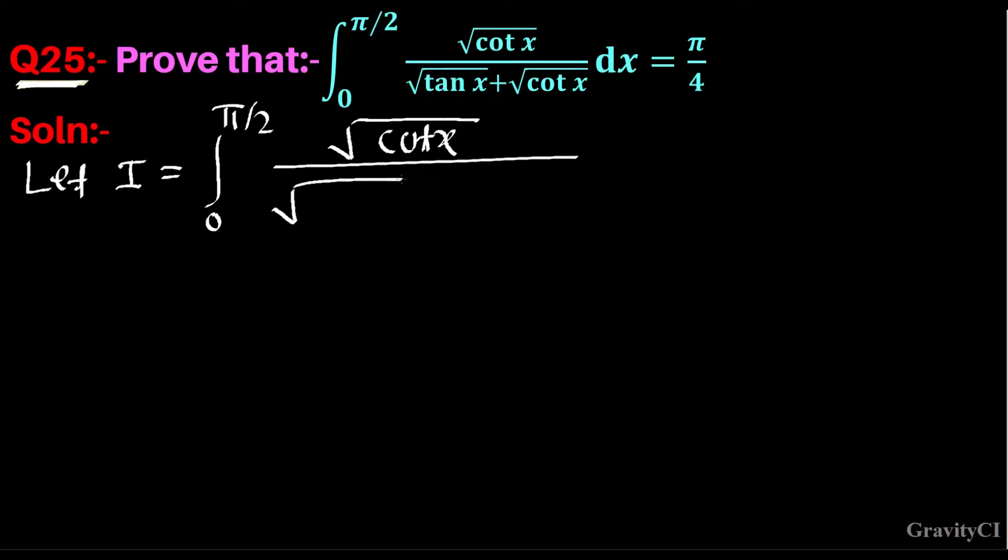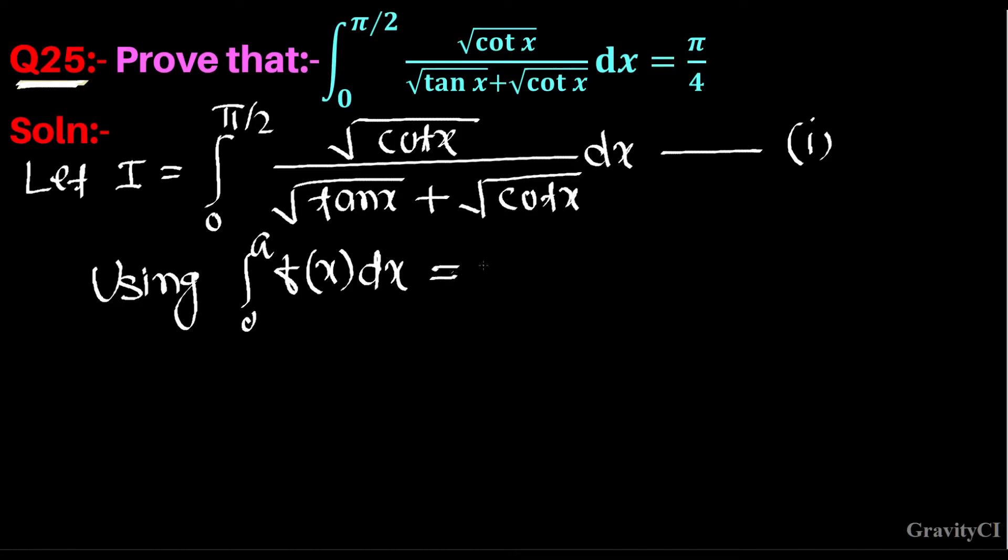And we take this first equation and use this property: integral 0 to a of f(x) dx equals integral 0 to a of f(a minus x) dx. We use this property here, so according to this...